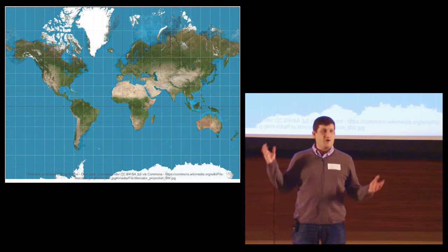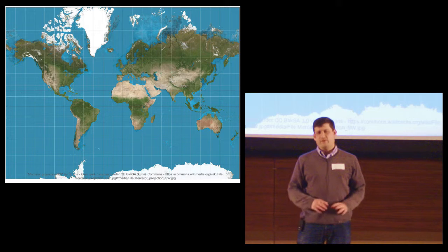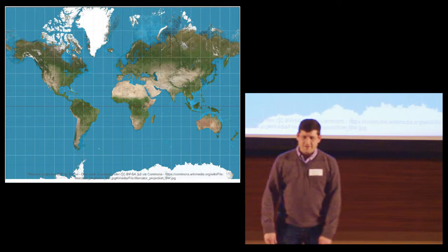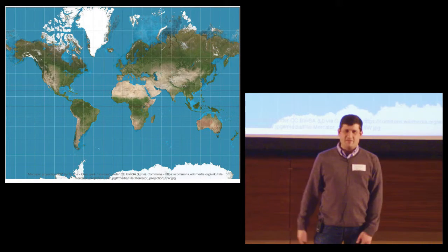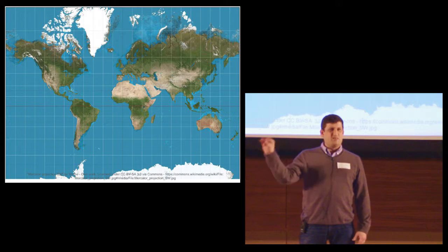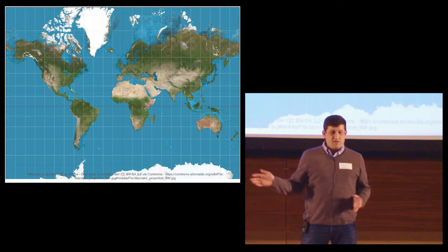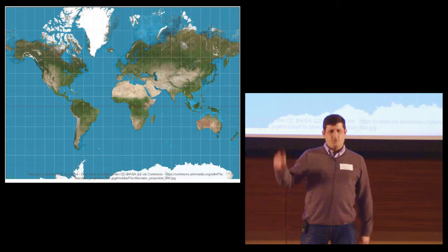This is the Mercator projection. It's a map for people who don't give a shit. It came out in the 1500s. It makes things at German latitude look good. It's good for going east-west. It's terrible at the poles.